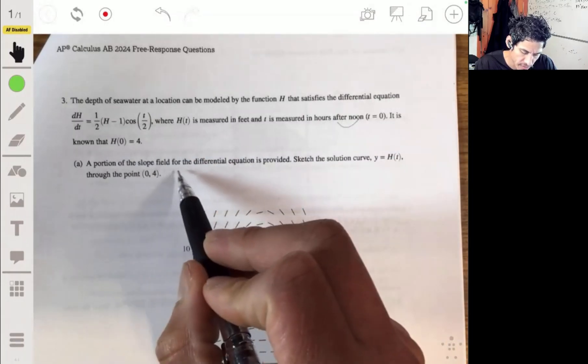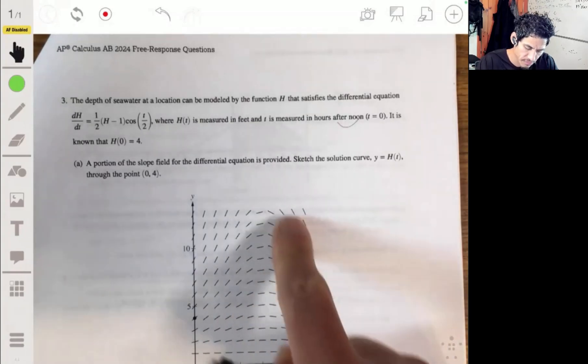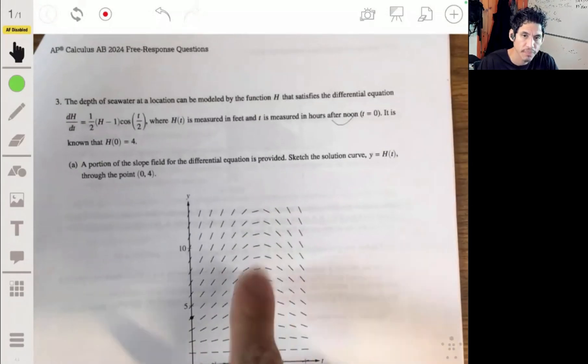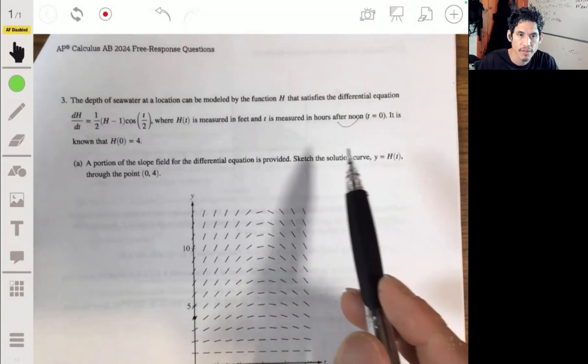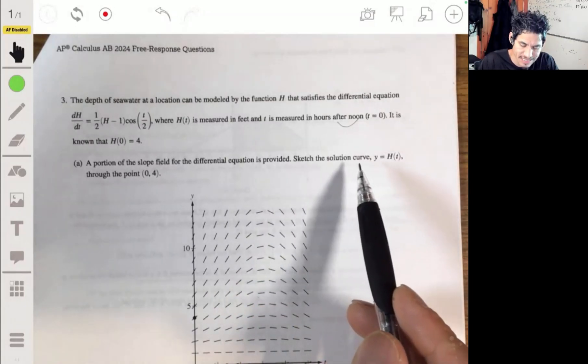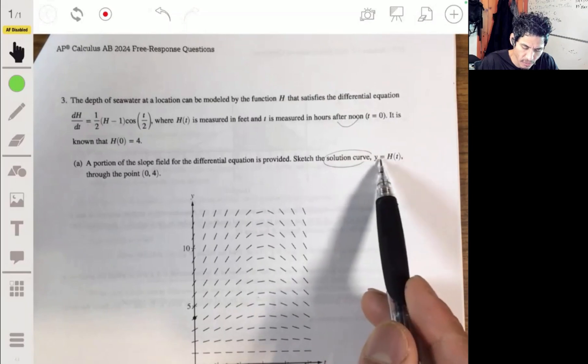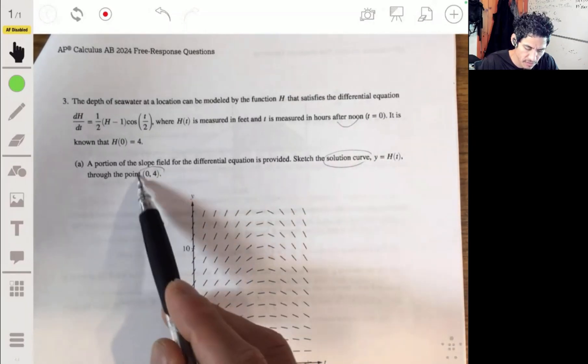A portion of the slope field for the differential equation shown here is provided. And for this first part, we've got to sketch the solution curve y equals h of t through the point 0, 4.